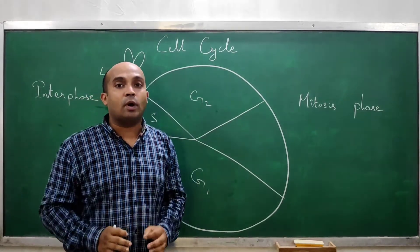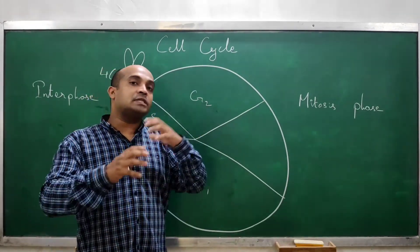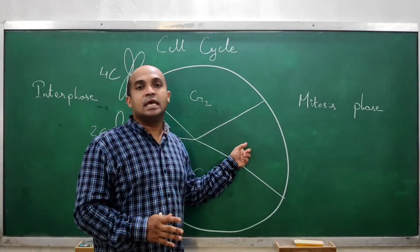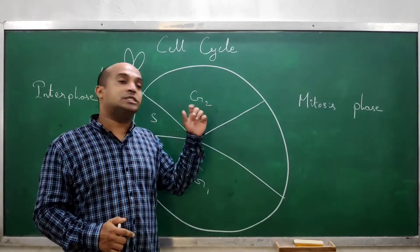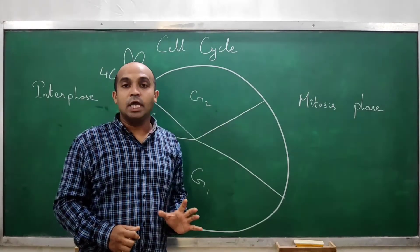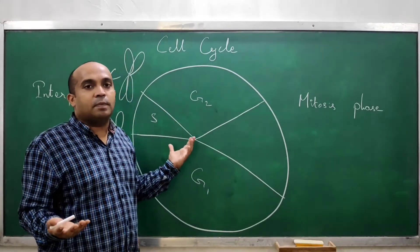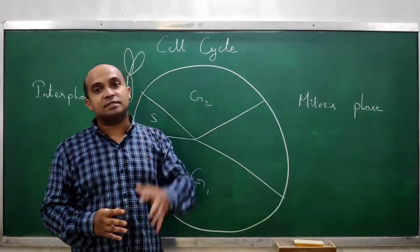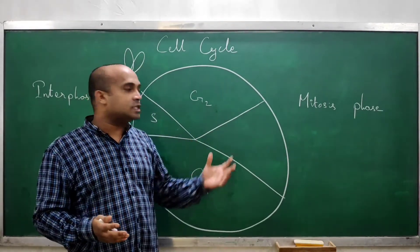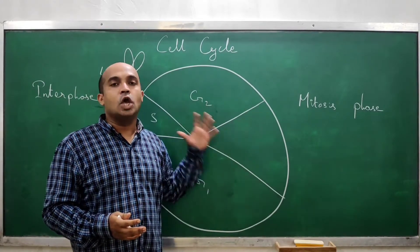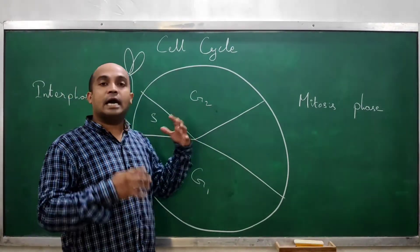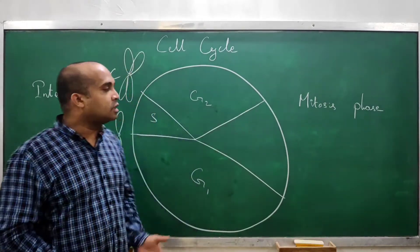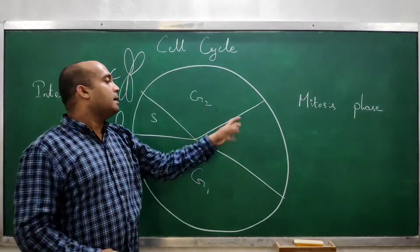After S phase comes G2 phase, which is also very important. In G2 phase, all the proteins, enzymes, and RNA molecules required to carry out mitosis are formed. G2 stands for Gap 2 phase. It produces all the proteins required for spindle fiber formation, aster formation, and all those enzymes required in M phase — mitosis — as well as all RNA molecules needed are formed in G2 phase.